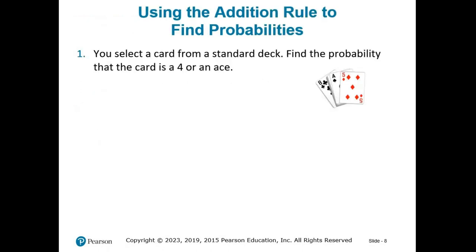You select a card from a standard deck. Find the probability that the card is a 4 or an ace. I want to highlight the difference in wording from the last section: with the multiplication rule we talked about things happening in sequence, like 'find the probability of selecting a 4 and then selecting an ace.' Here, we're finding the probability on a single trial. Can a card be both a 4 and an ace? No — so those events are mutually exclusive.